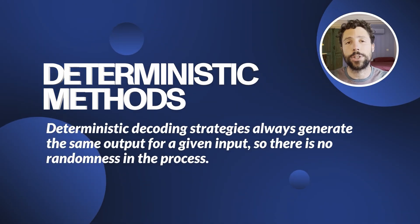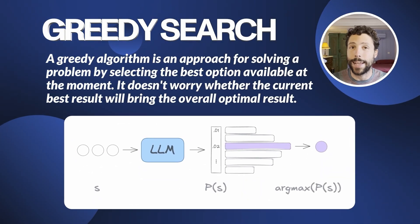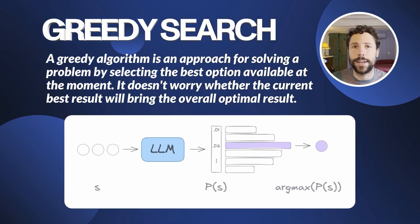Let's look at two basic examples of deterministic methods, where the same input always generates the same output. The simplest decoding strategy is greedy search: at each step, choose the token X as the most likely token given the context S. Despite what many people think, this is not how current conversational language models produce text. Greedy search doesn't necessarily produce the most likely overall sequence — it just picks the most likely token at each individual step. Choosing a less probable token at one step could well lead to a more probable overall sequence in subsequent steps.